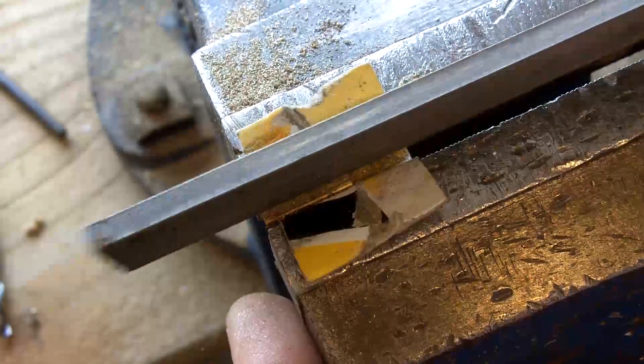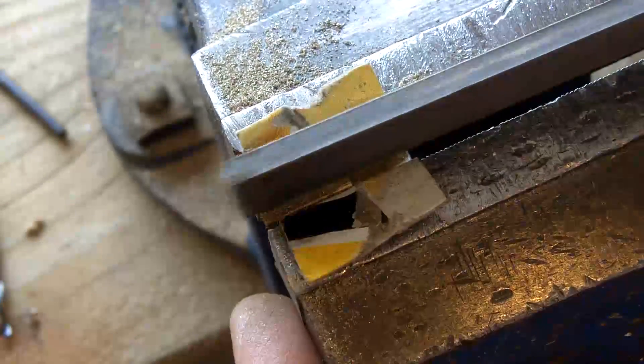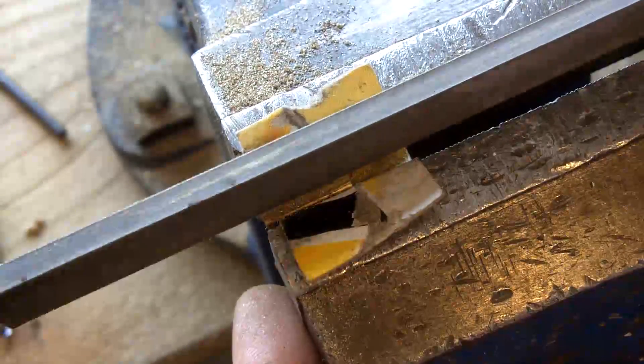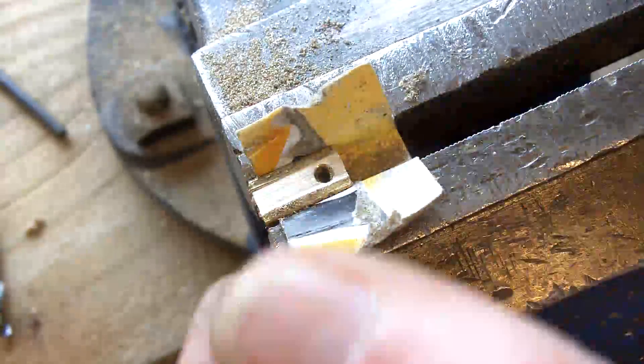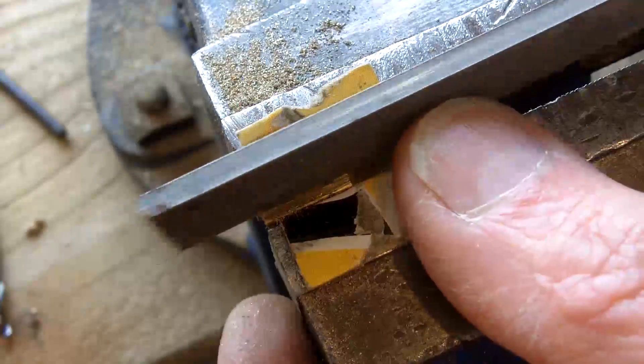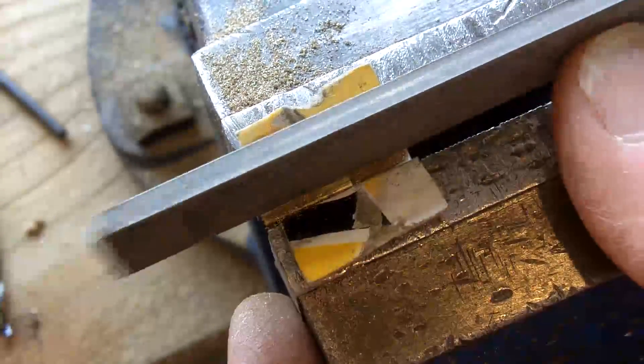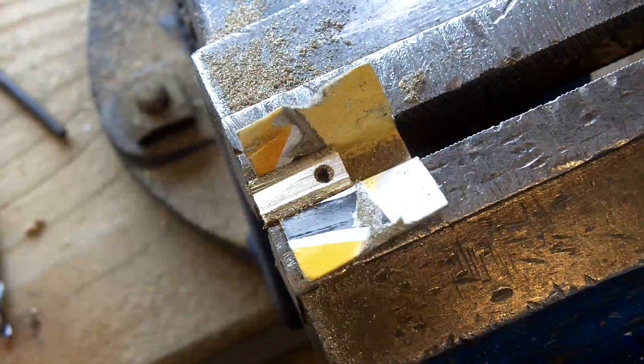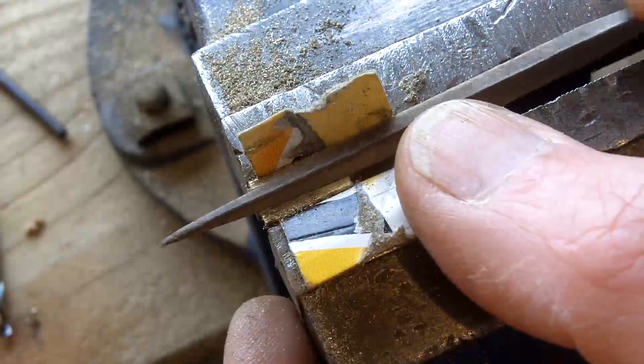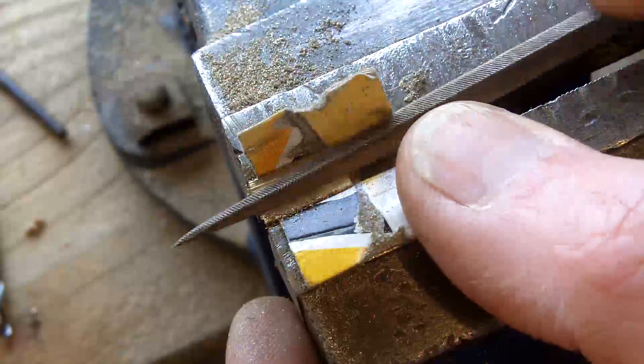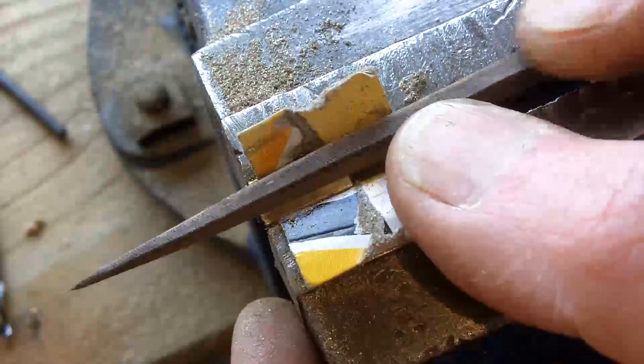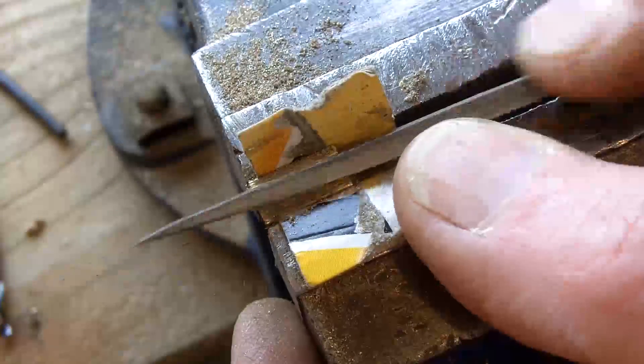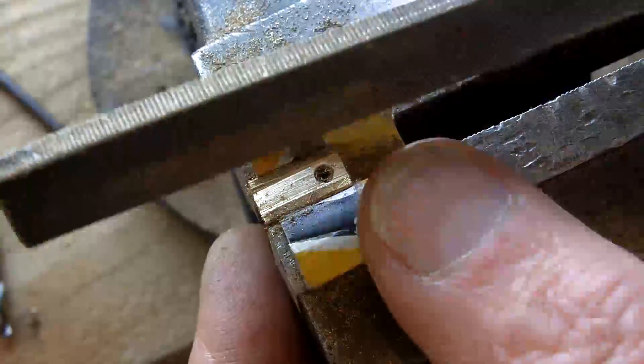Just need a little slot to accept the tongue on that switch. It doesn't need to engage very far, but I just think it would be useful. This is where I miss having a mill.